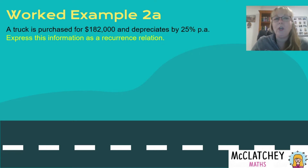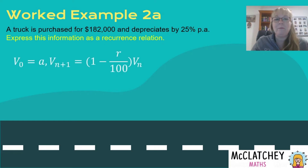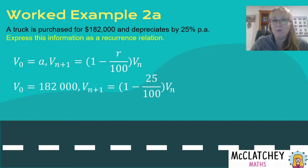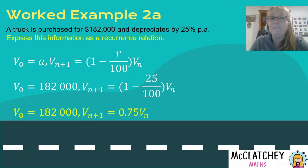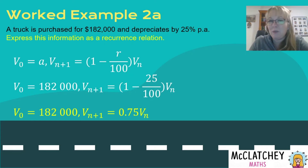Let's look at a worked example: a truck purchased for $182,000 depreciating by 25% per annum, expressed as a recurrence relation. We substitute into our basic form: V0 = 182,000, and our multiplier is 1 − 25/100 = 1 − 0.25 = 0.75. Make sure you simplify this — leaving it unsimplified in an exam may cost you marks. So the recurrence relation uses the multiplier 0.75.